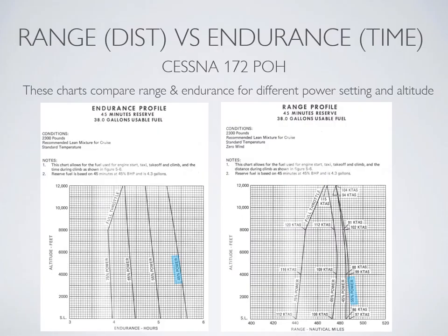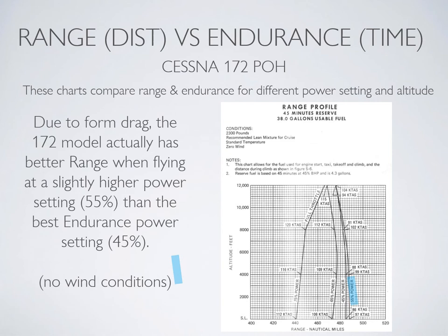But if you're flying a 172 model, your charts might show that at 55% power you're getting better range. Without getting too technical, due to drag characteristics, the 172 model actually has better range when flying at a slightly higher power setting than its best endurance, which shows at 45%.